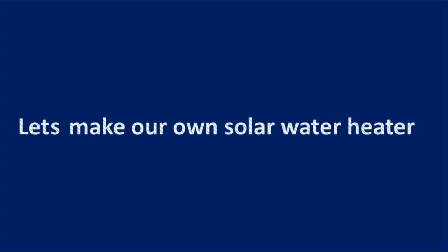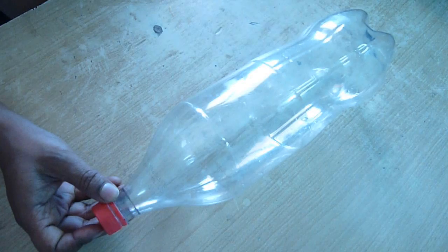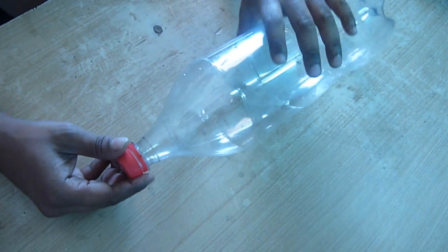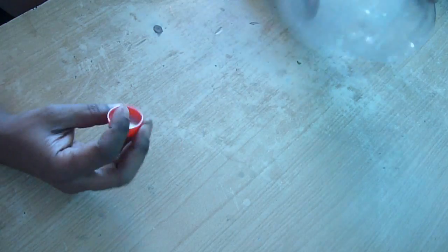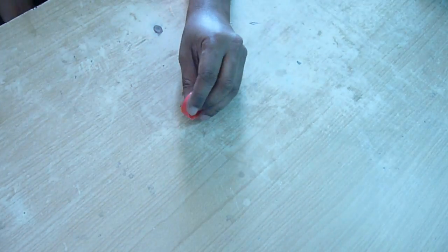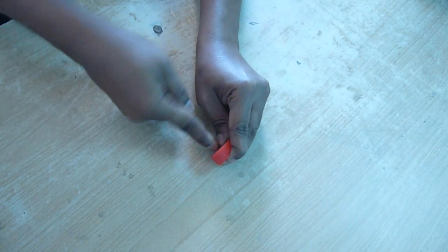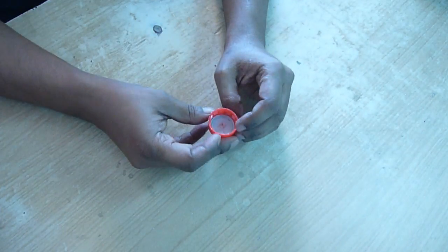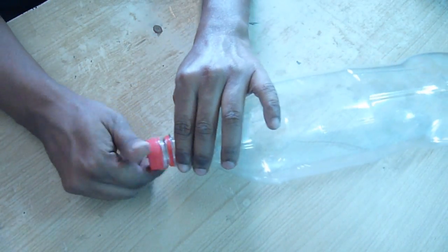Let's make our own solar heater. Collect a cold drinks bottle, it is a two liter bottle. Make a hole on top of the cap. Now wrap 50% of the bottle with aluminum foil.